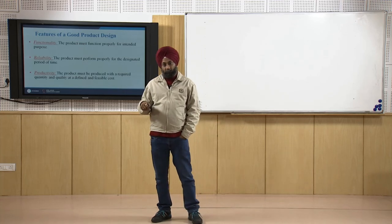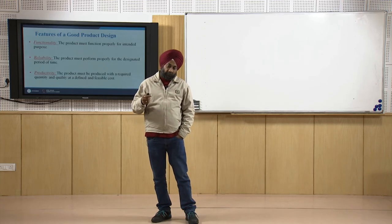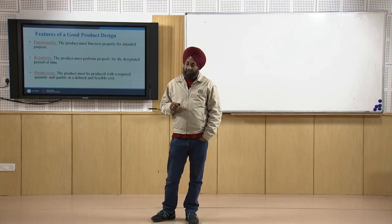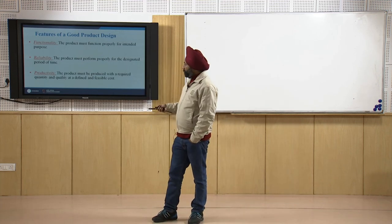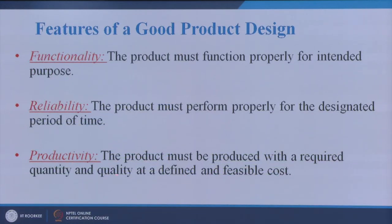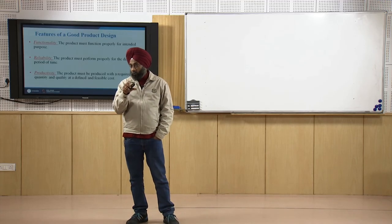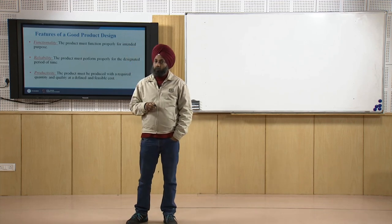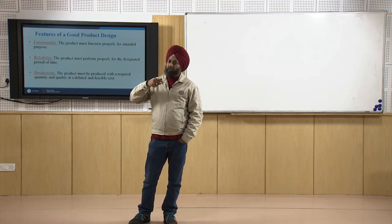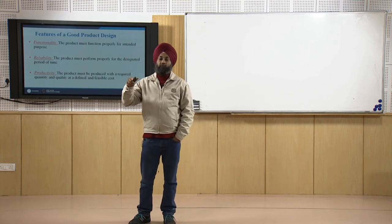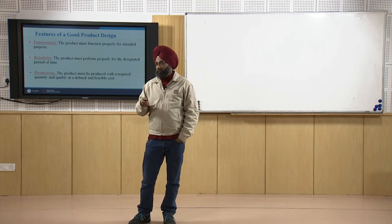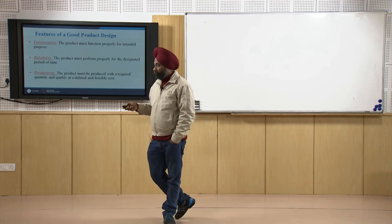For reliability, consider a pair of shoes - if I expect them to perform reliably for two years and they do, that is good product design for the designed life. Next is productivity - the product must be produced with the required quantity and quality at a defined and feasible cost. The design should enable effective and efficient production. If the product takes too long to manufacture, or if the defective items produced are too many, that will certainly affect the productivity of the organization.